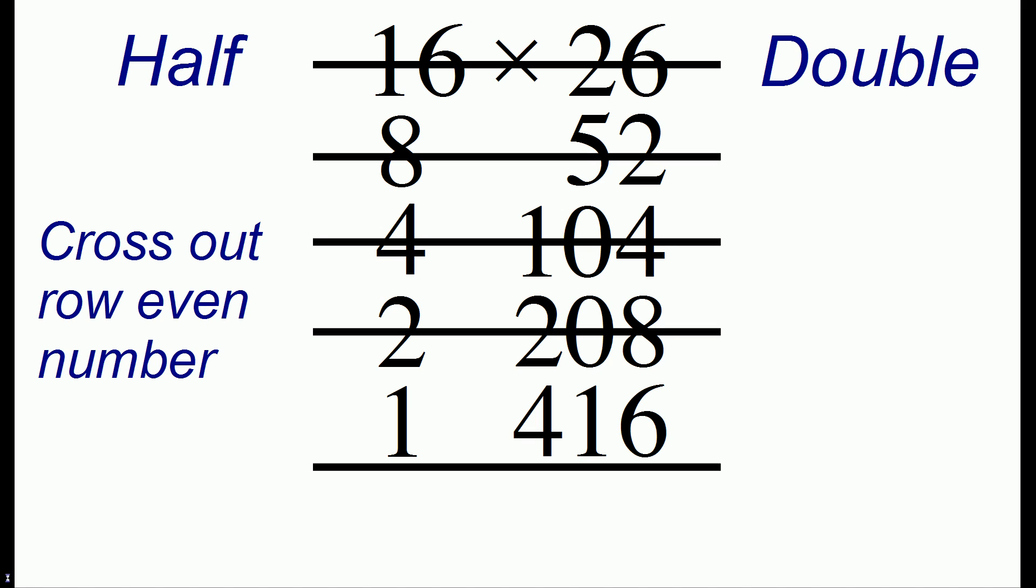The only row that remains is the last row, and so that's our answer, 416. And in fact, 16 times 26 is 416.